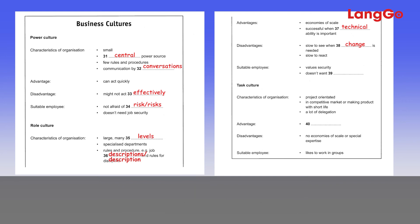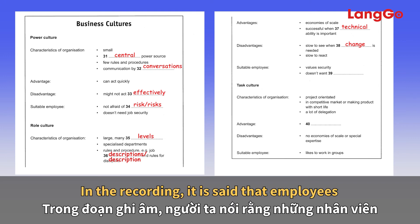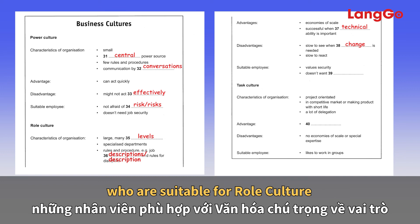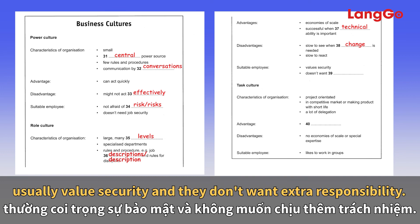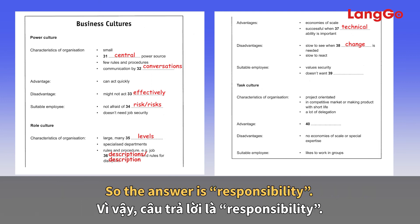Question 39 — doesn't want. The speaker says: it suits employees who value security and who don't particularly want to have responsibility. Employees suitable for role culture value security and don't want extra responsibility, so the answer is 'responsibility'.